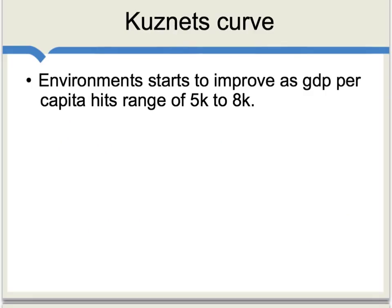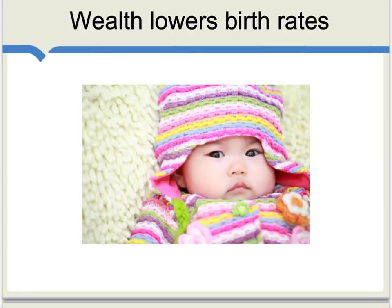Economists are fond of citing something called the Kuznets curve, which shows that many environmental problems start to improve as countries reach the middle income range of GDP per capita — about $5,000 to $8,000 per year. A much longer run factor is that greater wealth tends to lower birth rates, meaning less population in the longer run, which puts less pressure on the environment.